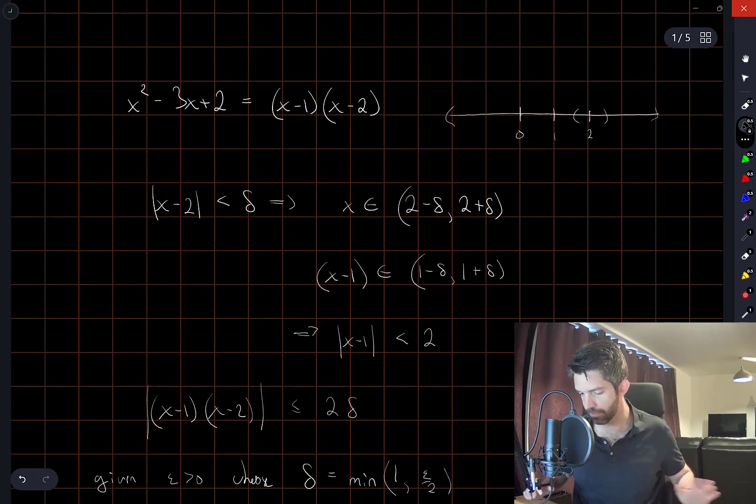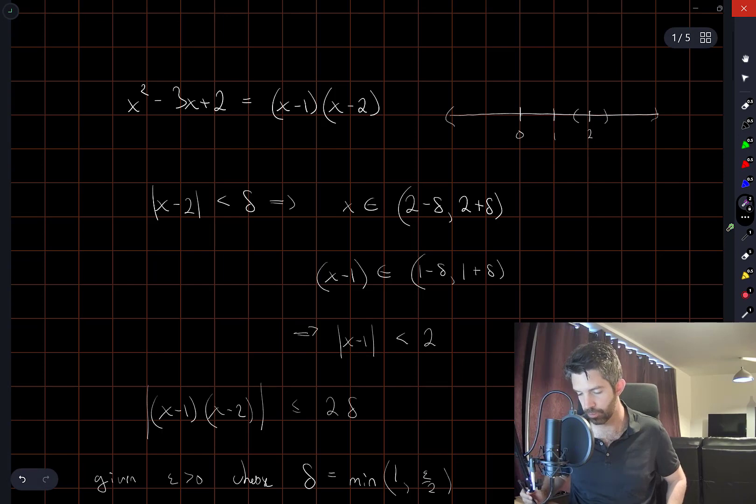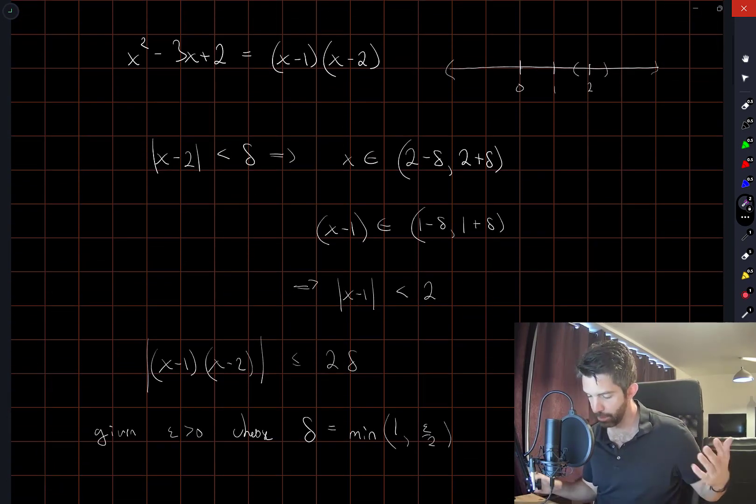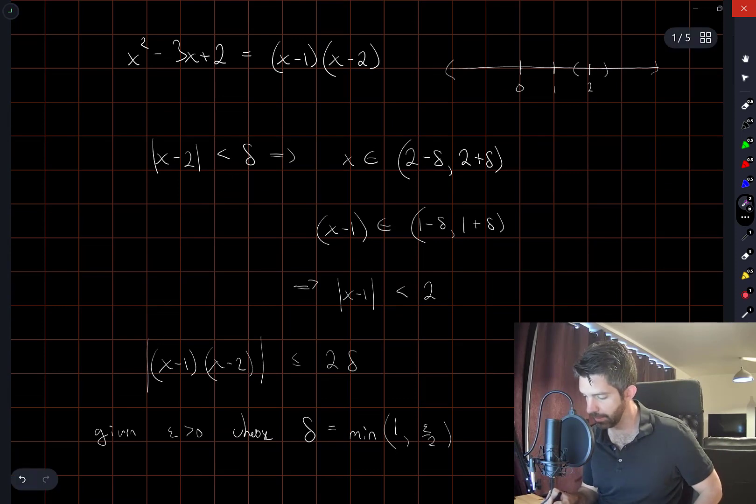Okay, so I've done some rough work here to figure out a reasonable way of choosing delta in terms of epsilon. It helped, there were a lot of things that helped here, drawing a number line.